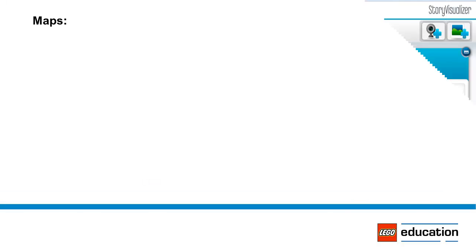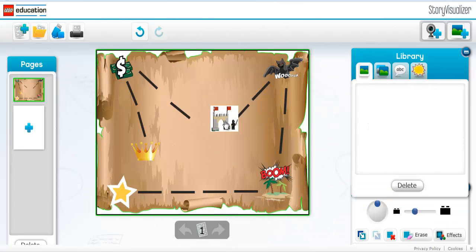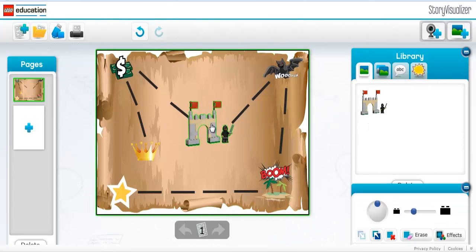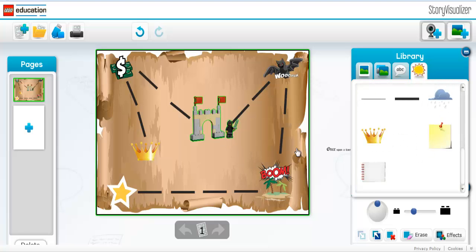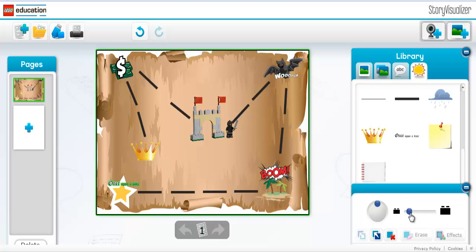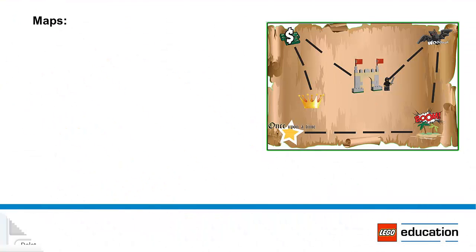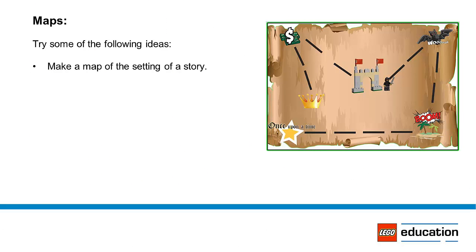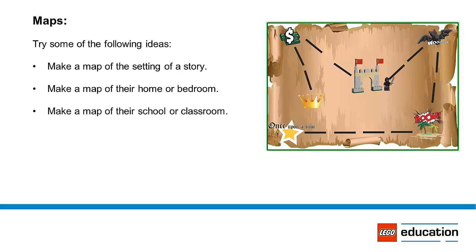Maps: Maps communicate information about location and distance. Stylized maps can be used to visualize regional information such as altitude, weather patterns, or demographics. Try some of the following ideas: have students make a map of the setting of a story, a map of their home or bedroom, or a map of their school or classroom.